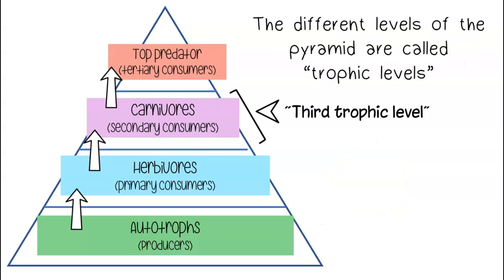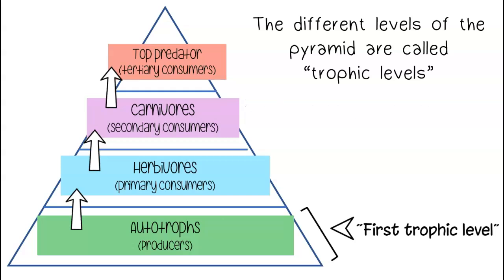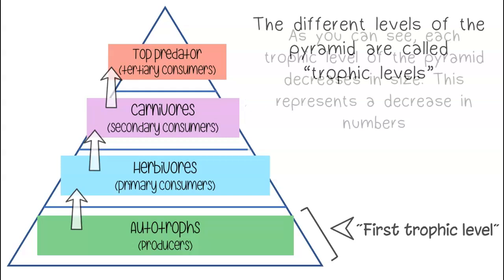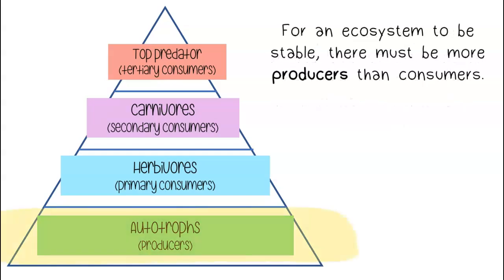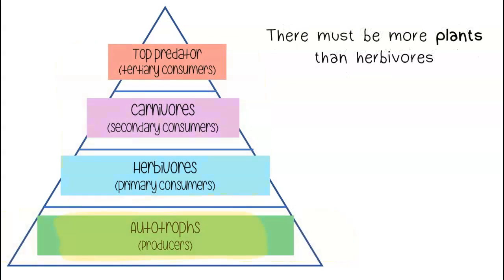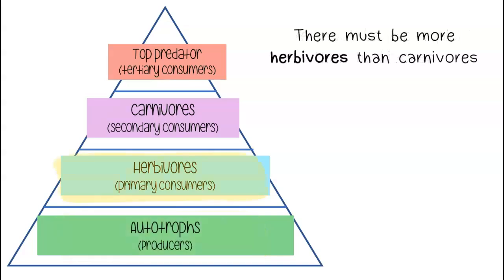The different levels of the pyramid are called trophic levels. As you can see, each trophic level of the pyramid decreases in size, representing a decrease in numbers. For an ecosystem to be stable, there must be more producers than consumers. There must be more plants than herbivores, and there must be more herbivores than carnivores.